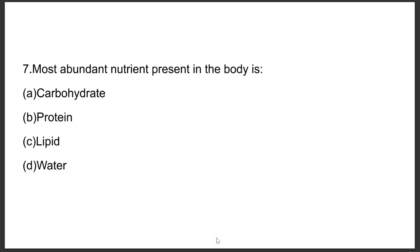Question number seven: The most abundant nutrient present in the body is — Option A: Carbohydrate, Option B: (skipped), Option C: Protein, Option C: Lipid, Option D: Water. The answer is Option D, water.